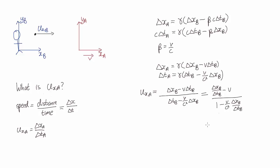Now delta x_b over delta t_b is u_x,b, the speed of the ball in Bob's frame. And so we arrive at this.